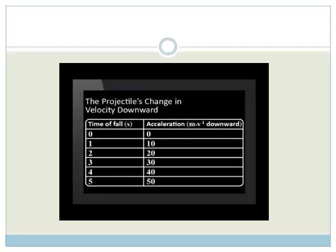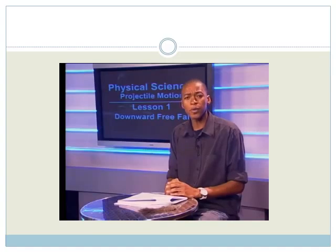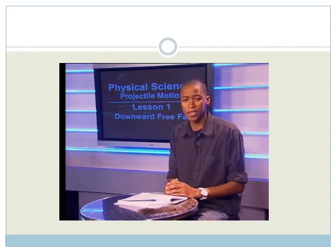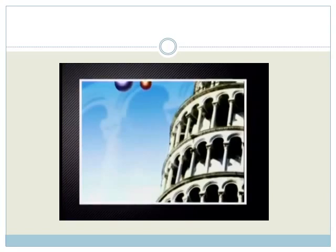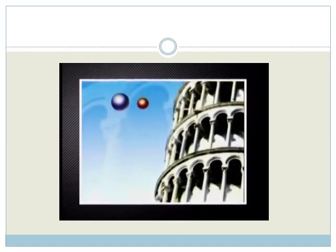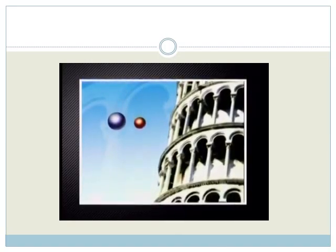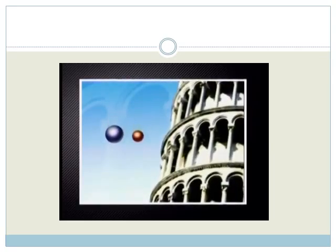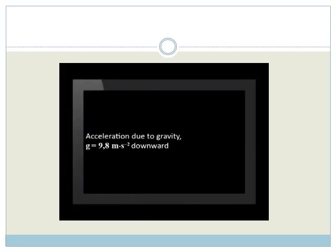The ball's velocity changes as it falls; however, the ball's acceleration is 9.8 meters per second squared downward all the time as it falls. All projectiles, not just our ball, fall freely to the Earth at 9.8 meters per second squared. It does not matter if the projectile is big or small, heavy or light — as long as it is a projectile in freefall towards the Earth, it will accelerate at Earth's acceleration due to gravity, G, which is 9.8 meters per second squared downward.